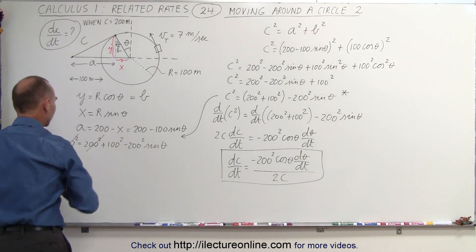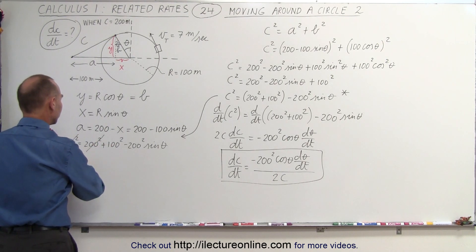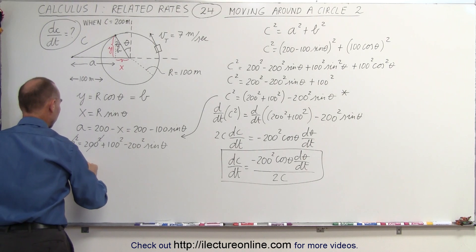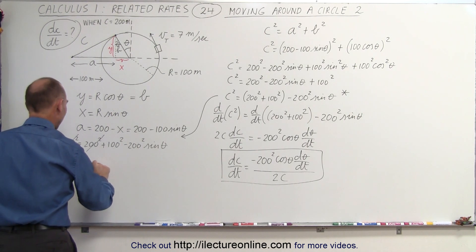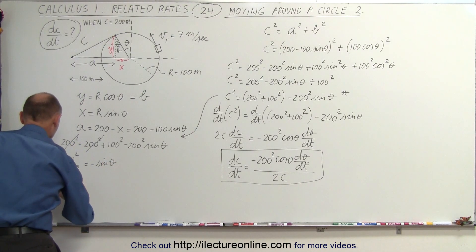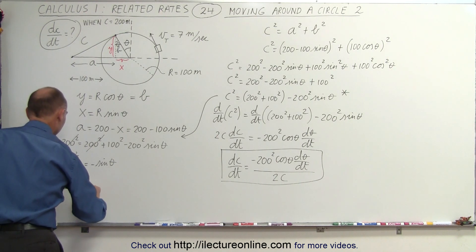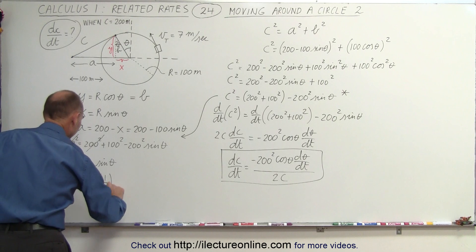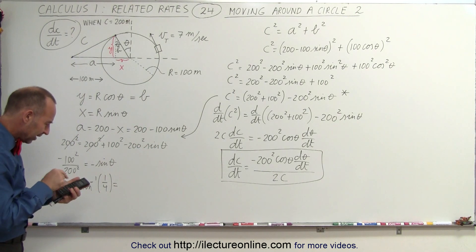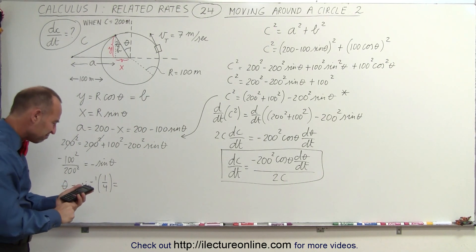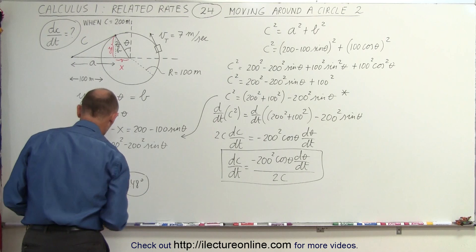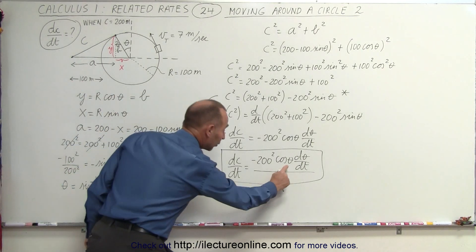With sin θ = 1/4, we get theta = arcsin(1/4) = arcsin(0.25) ≈ 14.48 degrees. Now we know the angle, so we can find the cosine of that angle. Next, we need dθ/dt.